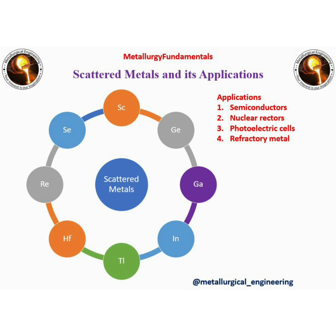Scattered metals include germanium, gallium, indium and related elements. Applications of scattered metals are in semiconductors, nuclear reactors, photoelectric cells and refractory applications.